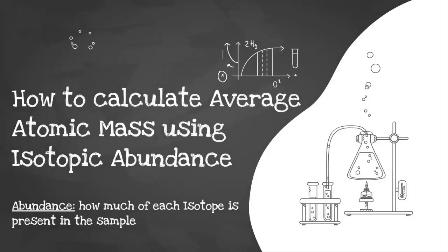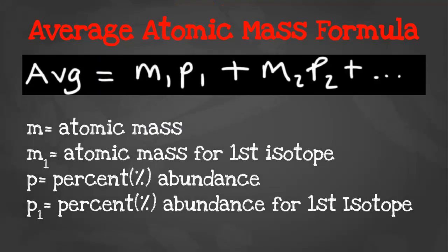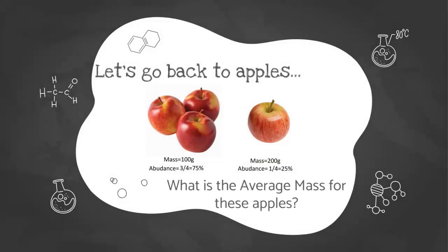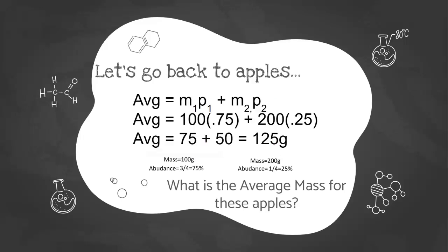So how exactly do you calculate average atomic mass? First off, what even is abundance? Abundance is how much of each isotope is present in the sample. There is a formula for average atomic mass. It's average equals M1P1 plus M2P2 plus however many isotopes you have. M stands for atomic mass and P stands for percent abundance. Let's go back to apples for a second. Let's say you have three apples with a mass of 100 grams and one apple with a mass of 200 grams. What's the average mass for these apples? Let's look at our formula and plug in the numbers that we know. So the average equals 100 grams times 0.75 plus 200 grams times 0.25. That's 75 plus 50. Add them together and you get an average mass of 125 grams.